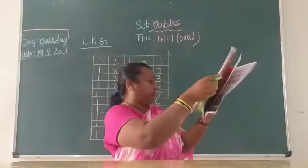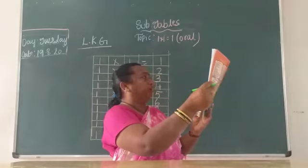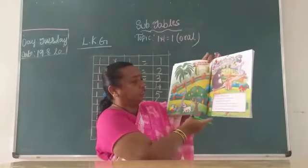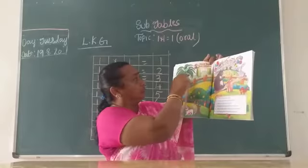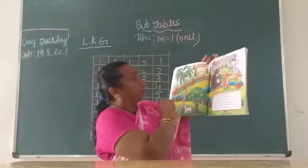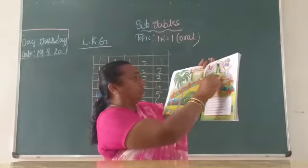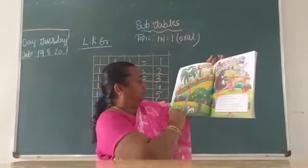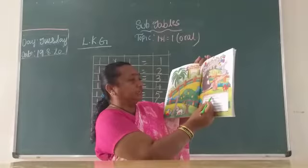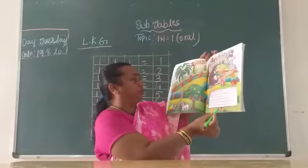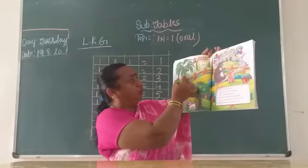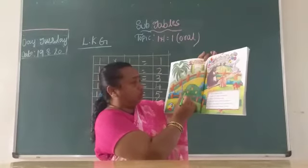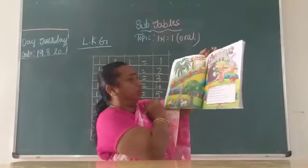Now take out page number 24 and 25. Look at this picture — what is this, children? Coconut tree, mango tree, and everything is there. Animals are playing. Tick the short tree. Which is short, children? The coconut tree is tall, the mango tree is short. You have to tick it.